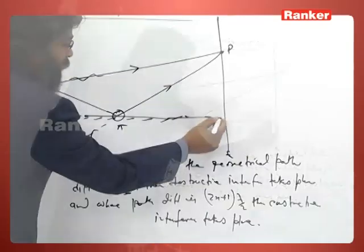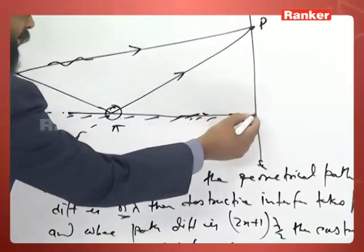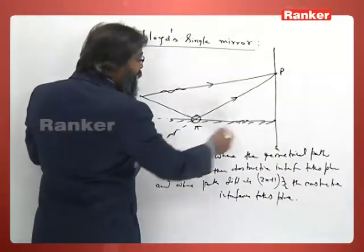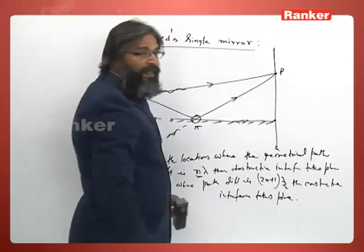Now if the screen is close to the mirror, then here there will be darkness, because in YDC here there will be central maxima, but here it will be a minima.